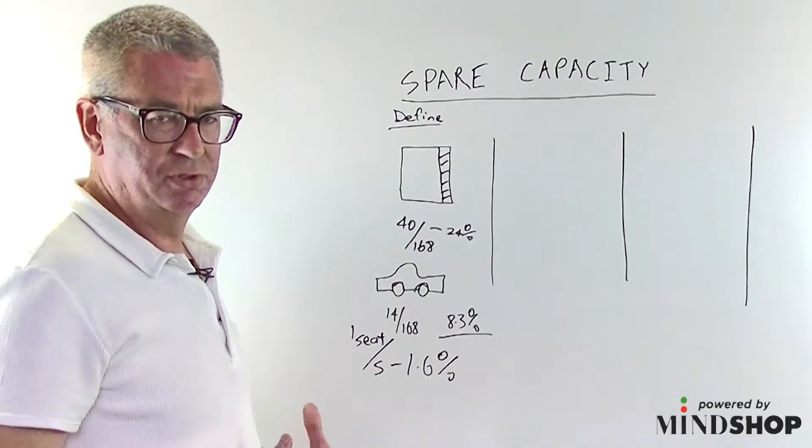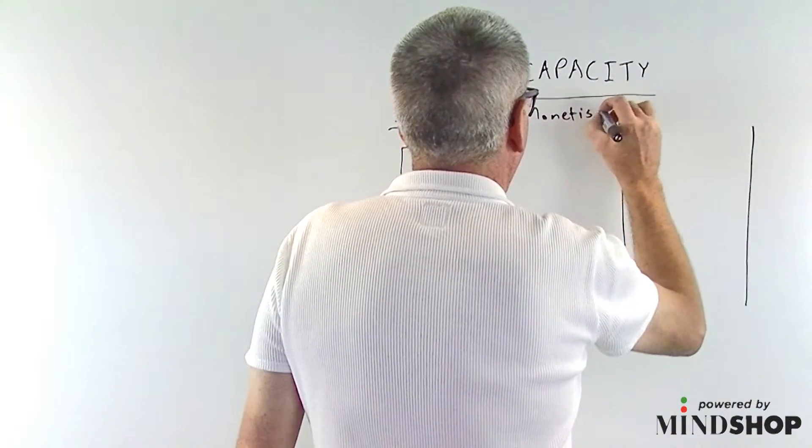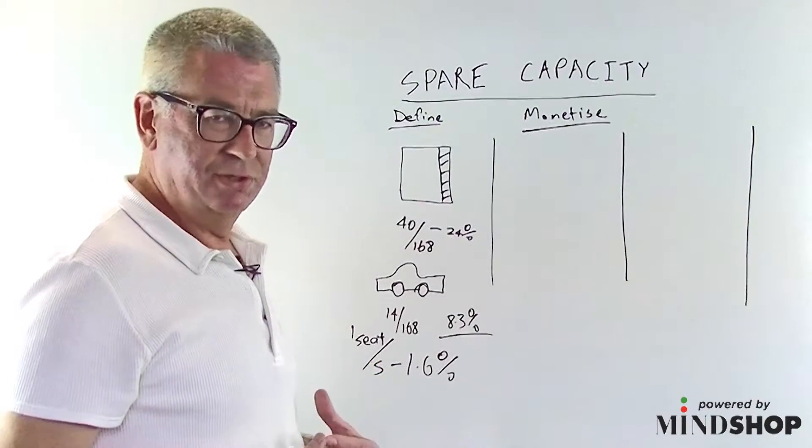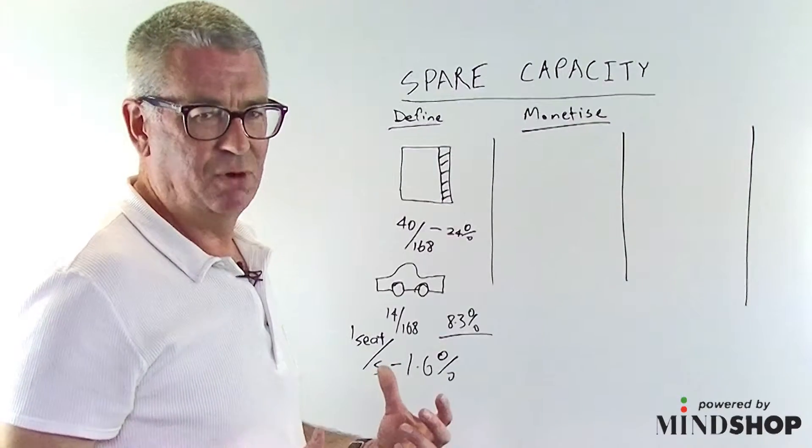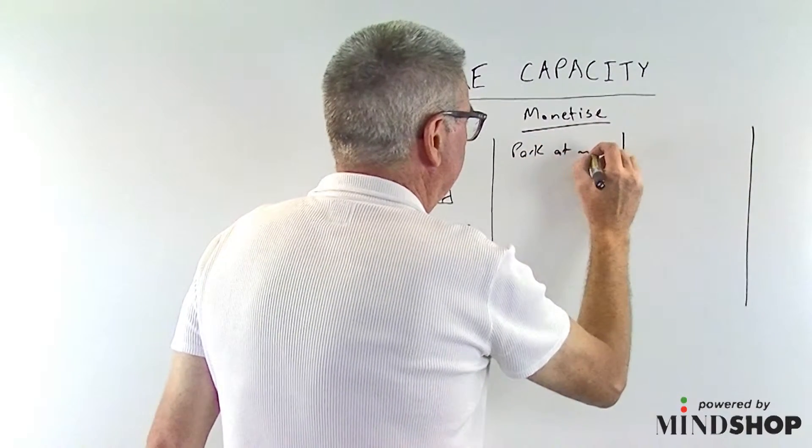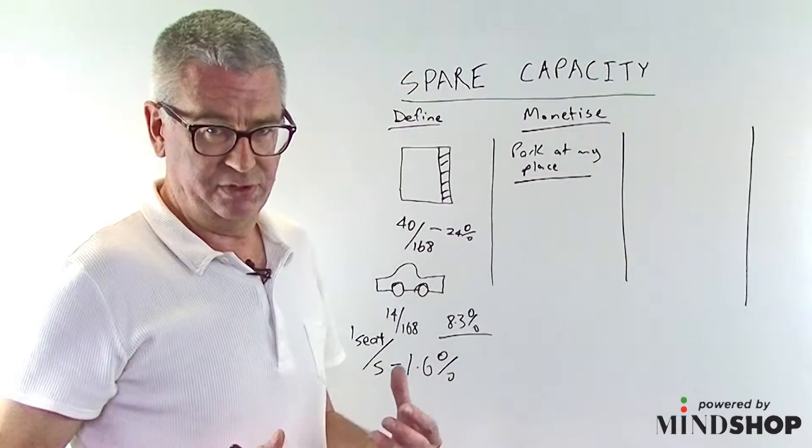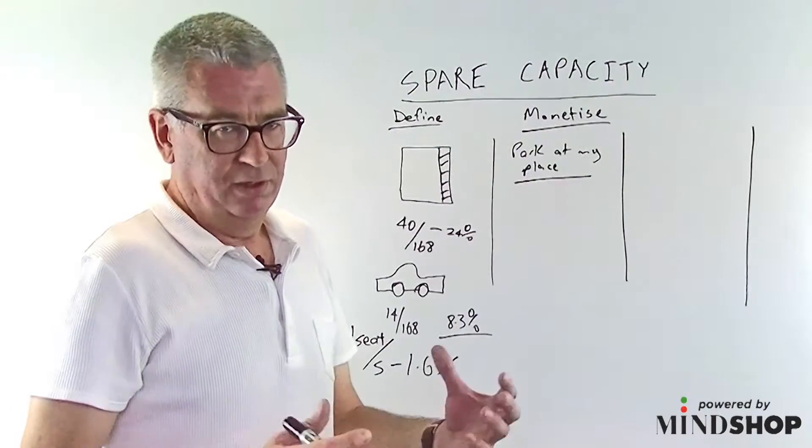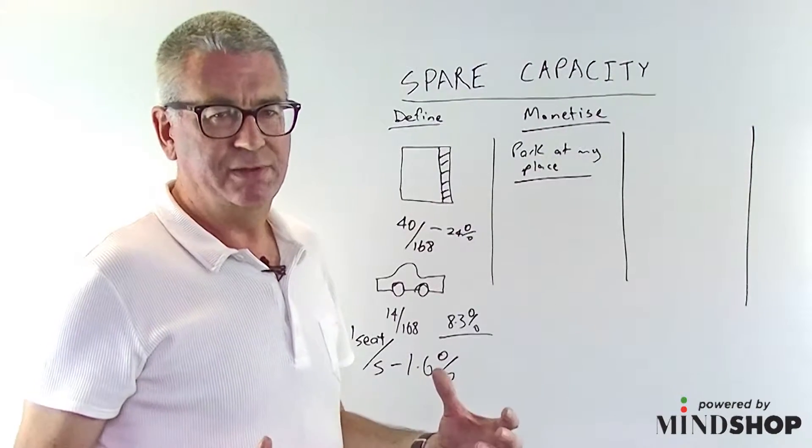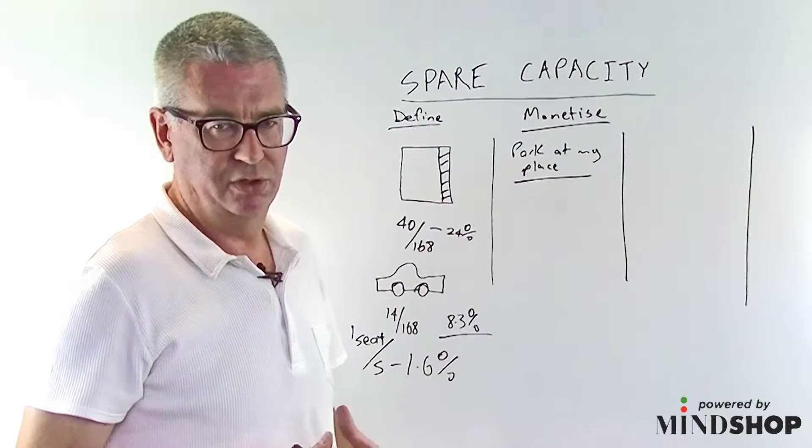So one of the first things we can do with spare capacity is to monetize it. We can sell it, and some of the business models for doing this are really quite interesting. So one of my favorites is Park at My Place. If you happen to own a house near, let's say Wembley Stadium, your driveway is spare capacity that could be sold. Park at My Place matches people with spare space in their driveway with people who want to park. It's a way to monetize something that's never been monetized before.